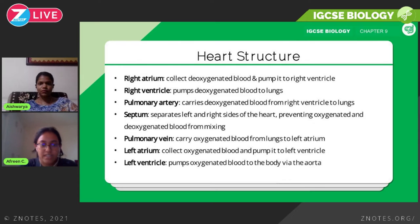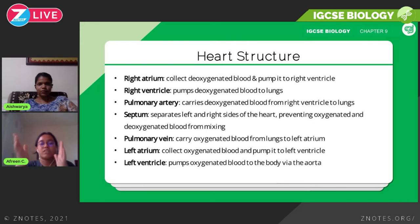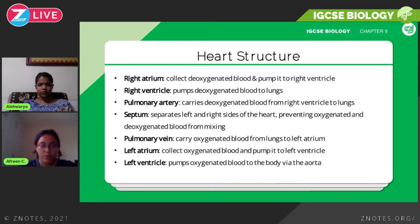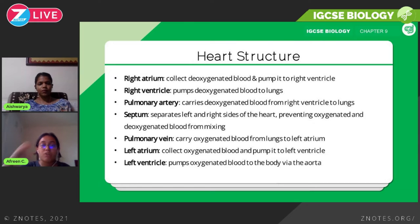The septum is a wall that separates the left and right sides of the heart. Its most important function is to prevent oxygenated and deoxygenated blood from mixing. The pulmonary vein carries oxygenated blood from the lungs to the left atrium — so after blood is oxygenated at the lungs, it returns to the heart via the pulmonary vein and enters the left atrium.